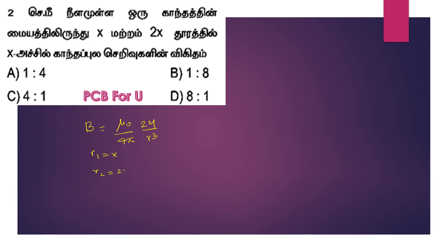R is equal to 2m by rq. B is equal to 1m by r1. B is equal to 1m by r2.